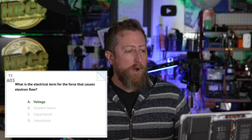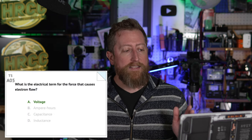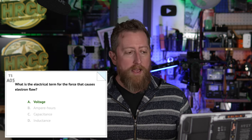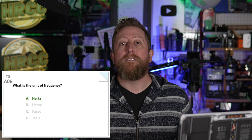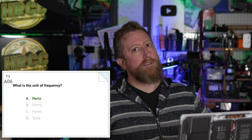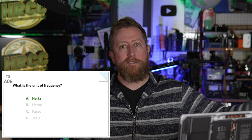Alpha 05: what is the electrical term for the force that creates electron flow? And that is A, voltage. Alpha 06: what is the unit of frequency? And that is Hertz. So we measure things — we say kilohertz, megahertz, gigahertz — but it's all just based on the Hertz. Alpha 07: why are metals generally good conductors of electricity? The answer is B, they have many free electrons.